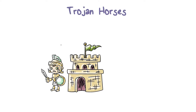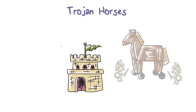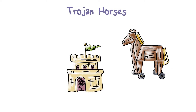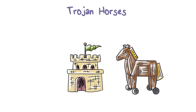Trojan horses get their name from a tale from the Trojan Wars. It is said that the Greeks wanted to enter the well-fortified city of Troy. Rather than launching a direct assault at the city and suffer huge losses, they devised a wooden horse, and they hid their soldiers inside the horse. Then they left the horse outside the gates of Troy as a gift.